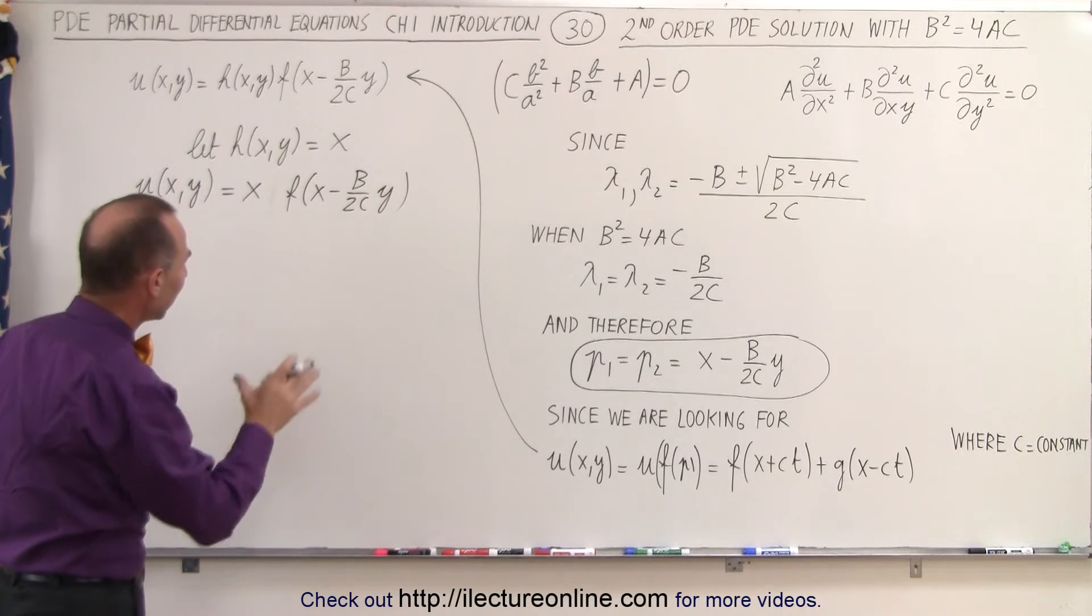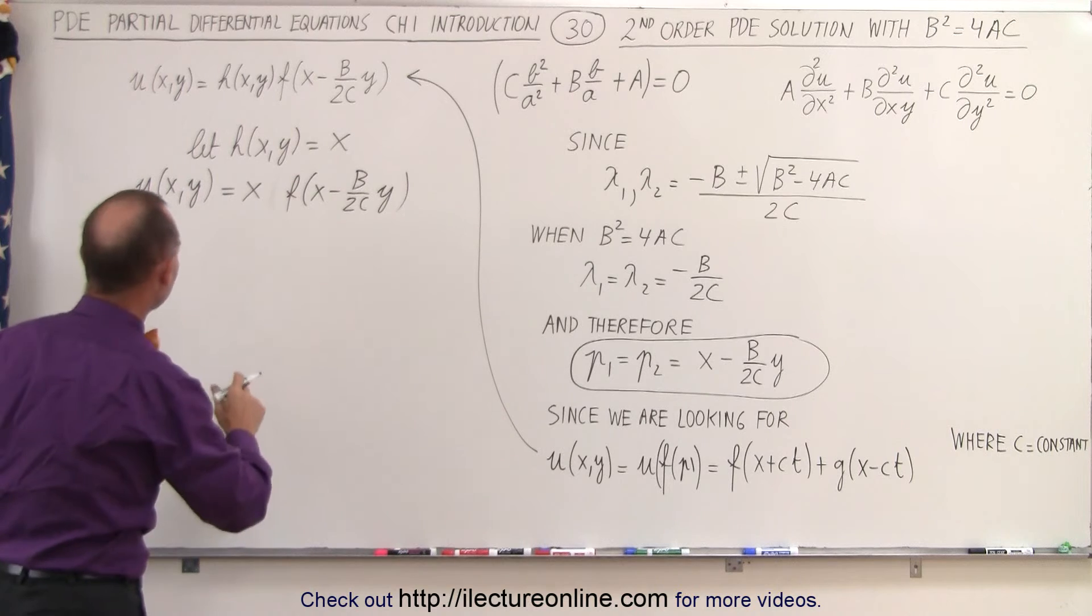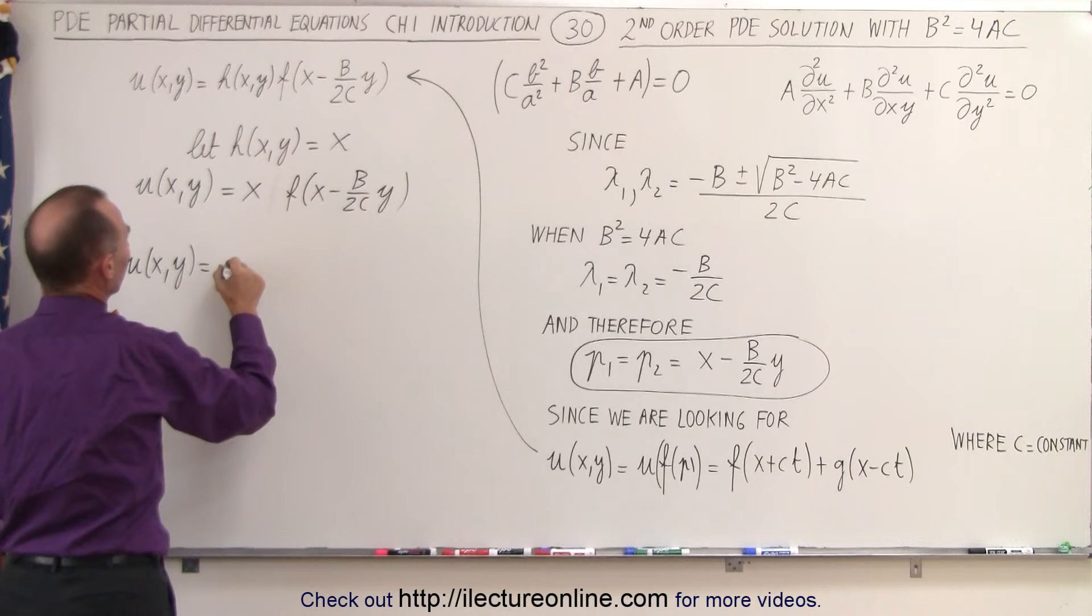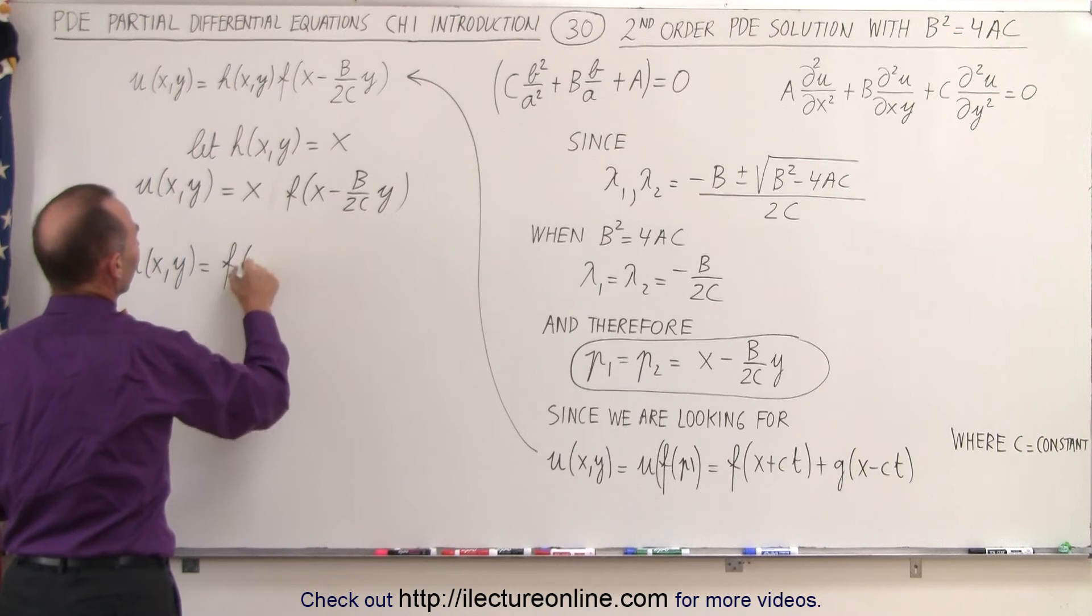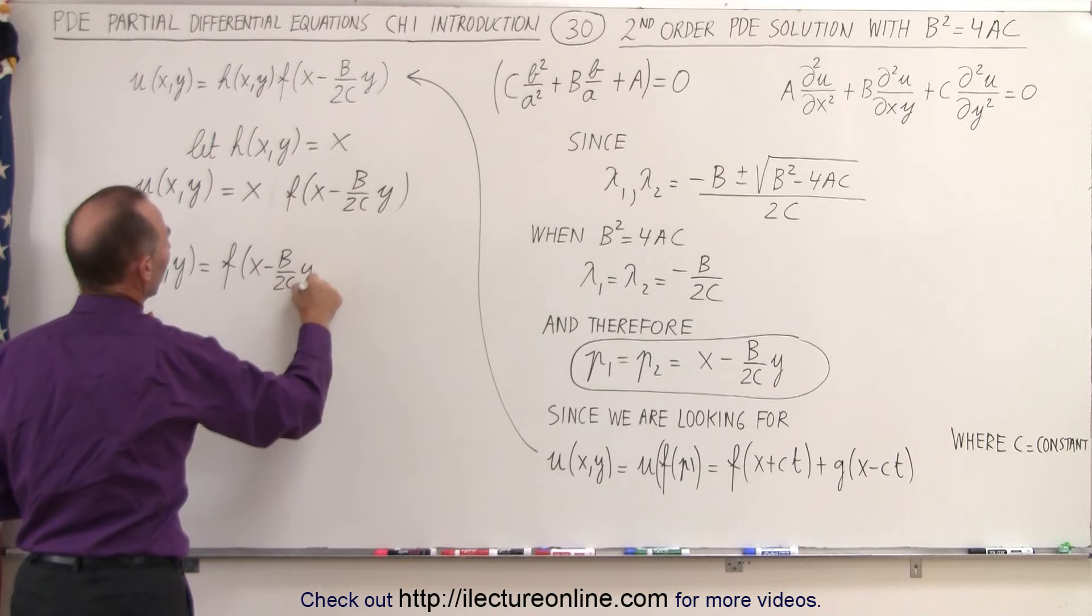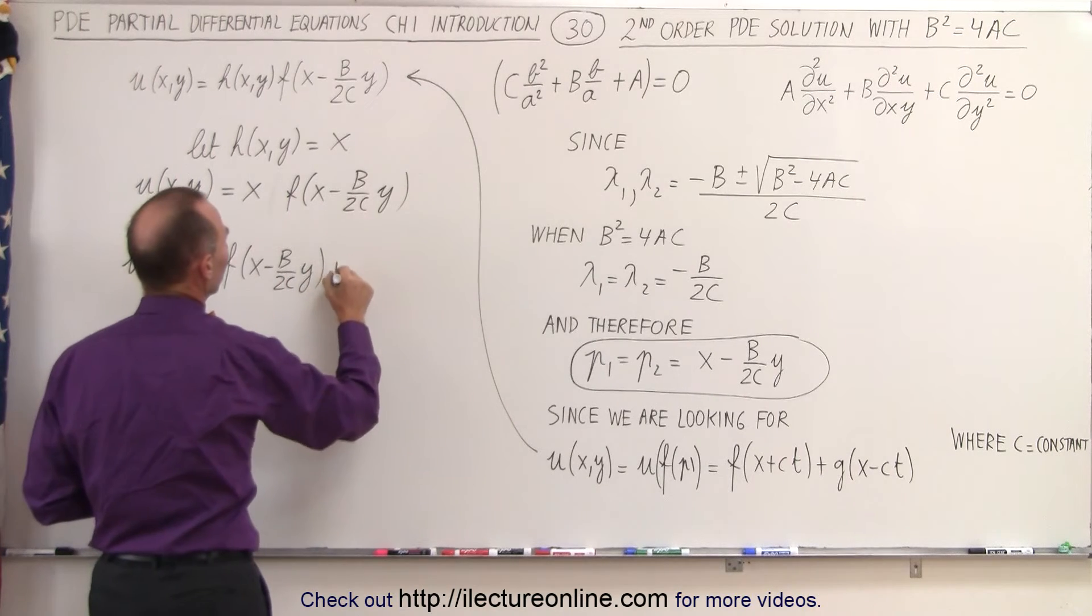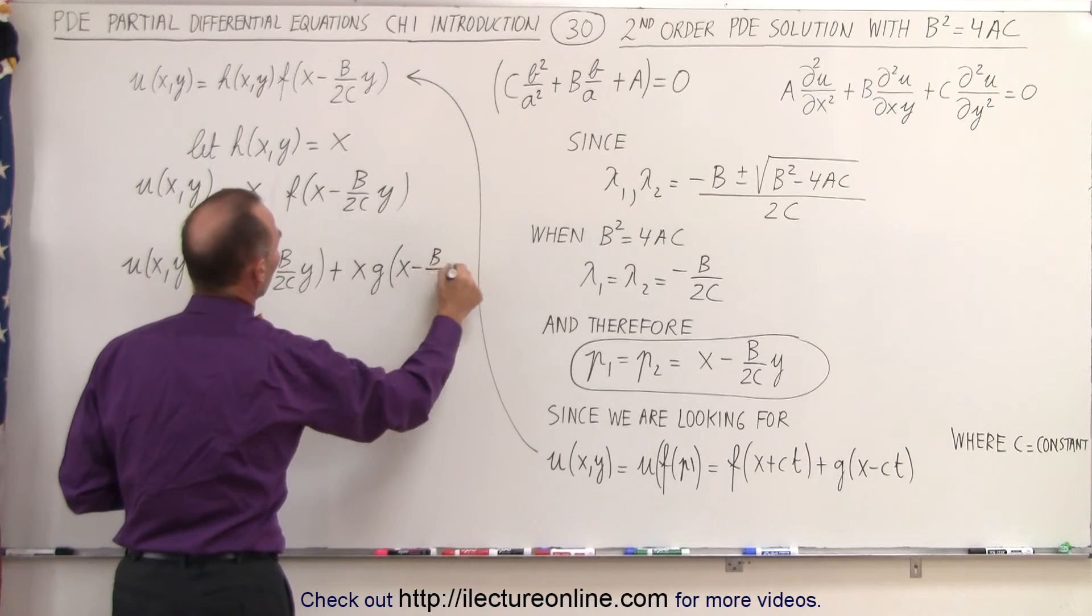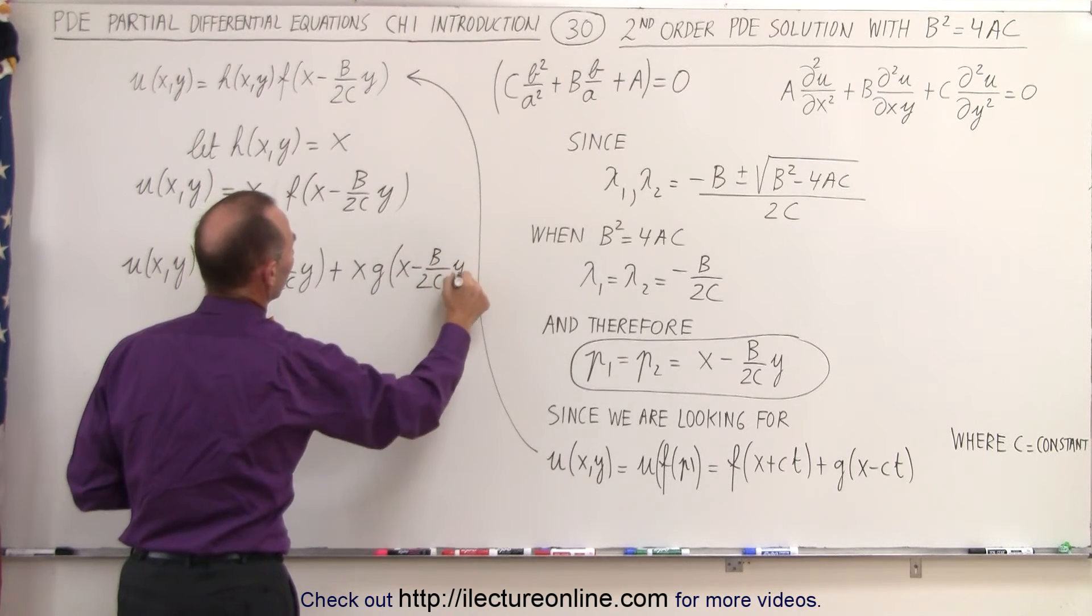And then if we go ahead and write the general solution based upon that, we can then say that u as x and y can then be written as the first function, f of x minus b over 2c times y, and then we can write this as plus x times another function of x minus b over 2c times y.